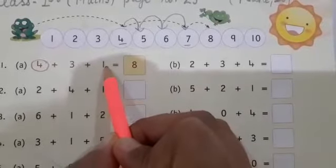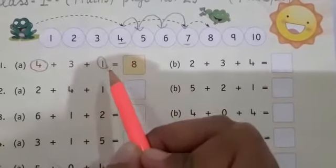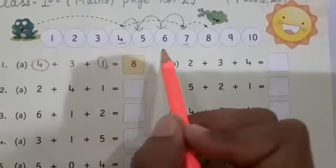After that, which number are you given at the end? One. That means after three, you have to jump one more time.